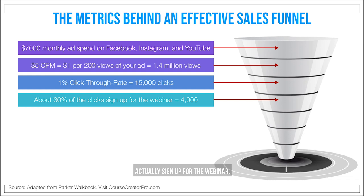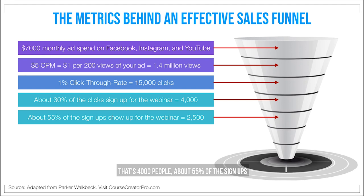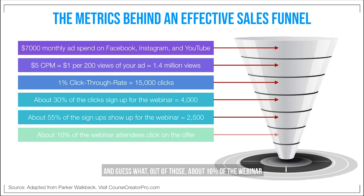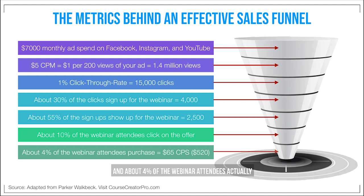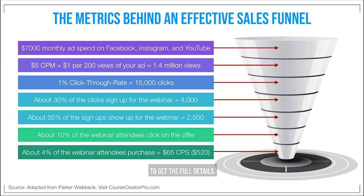About 30% of the clicks actually sign up for the webinar — that's 4,000 signups. About 55% of those signups show up for the actual webinar, that's 2,500 people. About 10% of webinar attendees click on the offer, and about 4% actually make a purchase, which is a $65 cost per sale. A special shout out to Parker Walbeck at coursecreatorpro.com — a version of this chart is on his homepage, be sure to check it out.